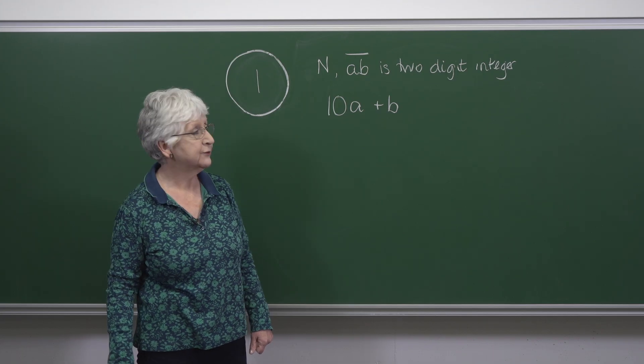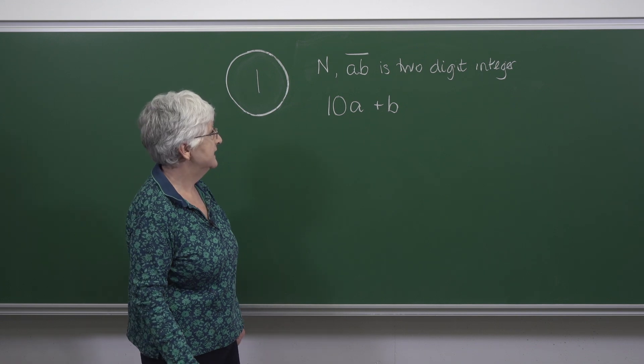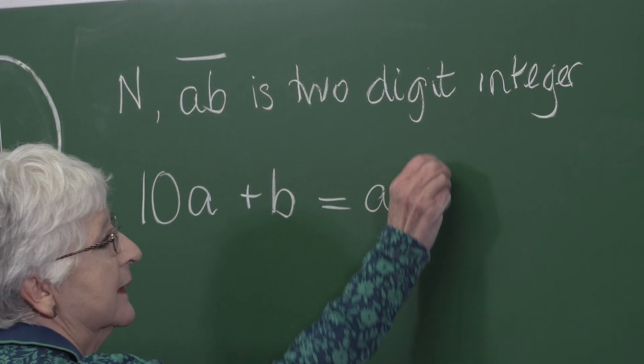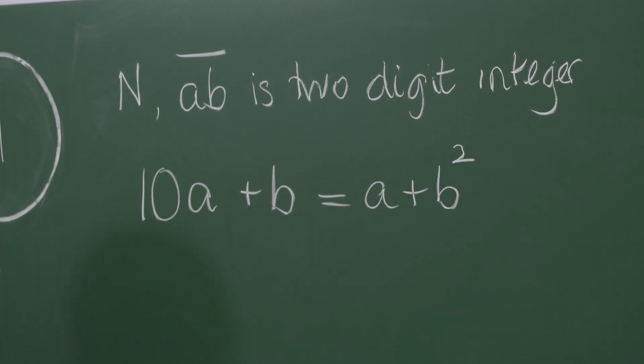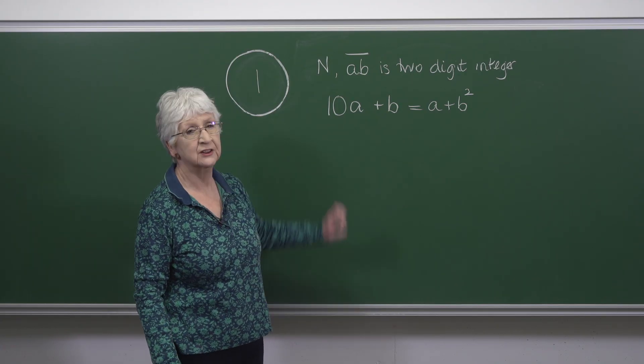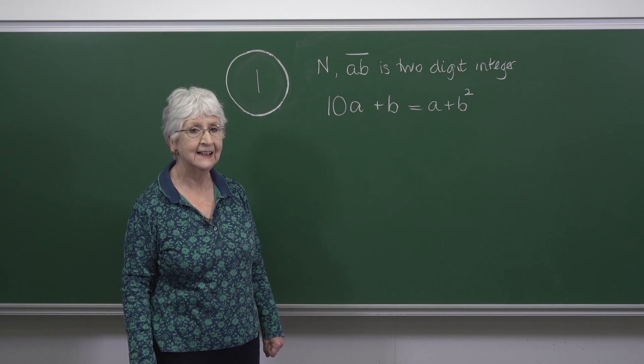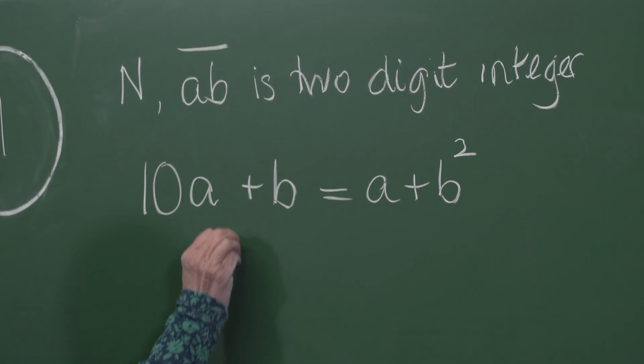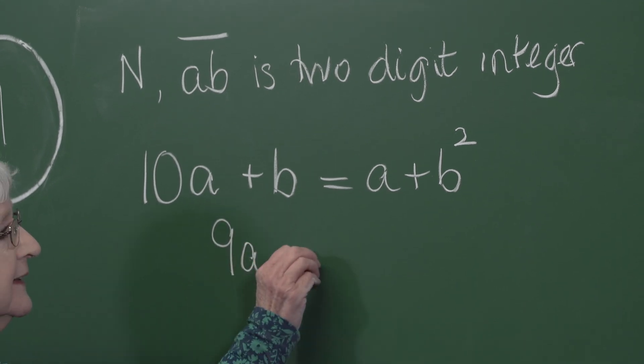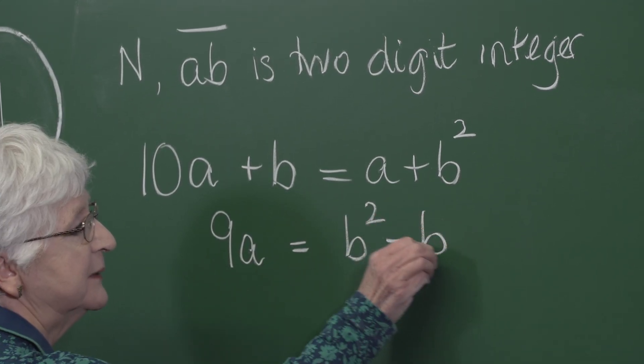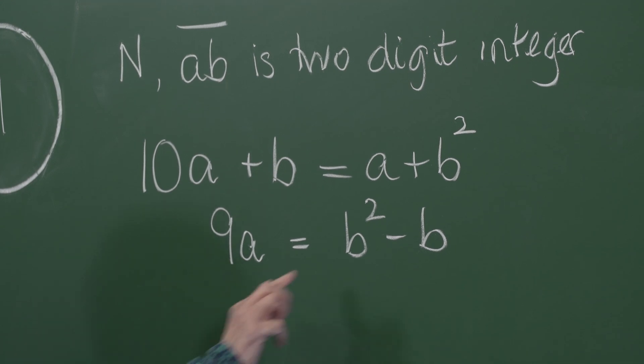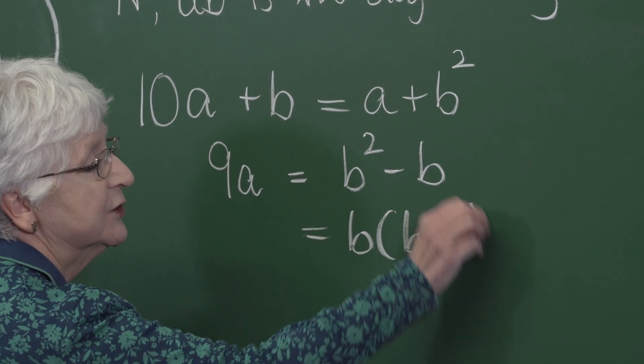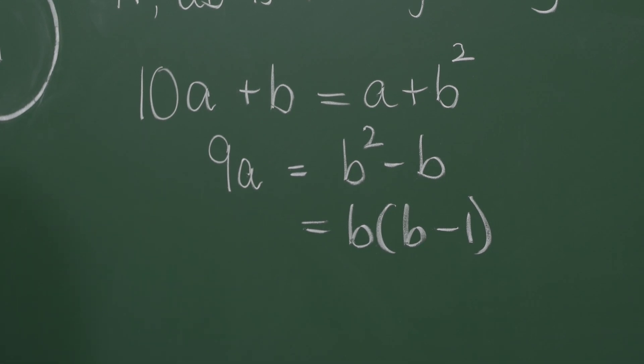But we're also told that N is A plus B squared. Now we have this equation. If I take an A and a B from each side of this equation, I get 9A is B squared minus B. And B squared minus B factorizes into B times B minus 1.